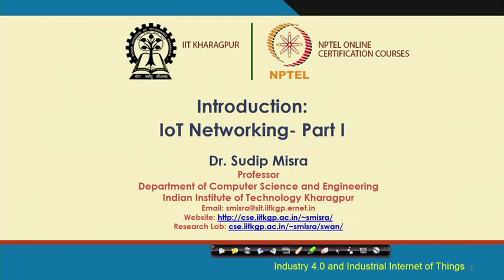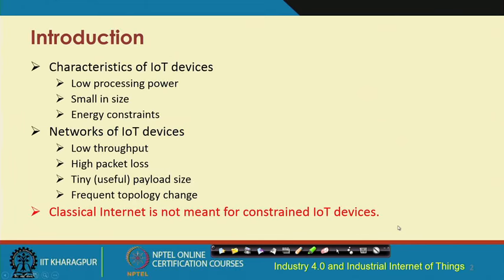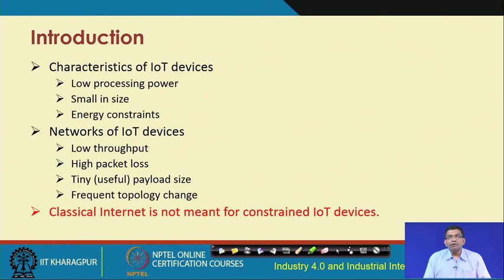In this particular lecture we will conceptually continue with whatever we were discussing, but from a networking point of view we will look at the different other aspects of setting up IoT systems and what solutions are there to address them. Let us first look at some of the characteristics of IoT devices, but before that let us quickly recap the typical network encountered in IoT systems.